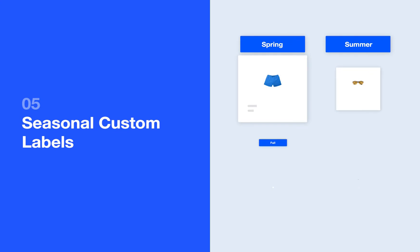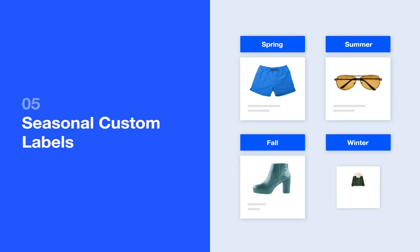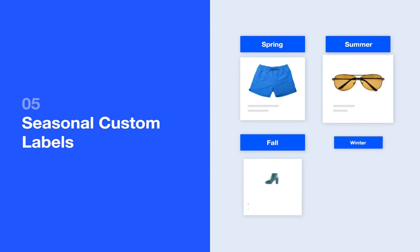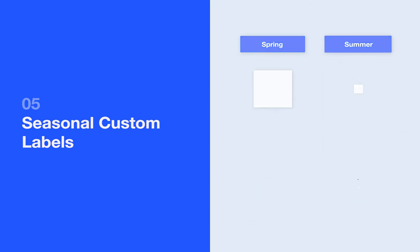Seasonal labels like fall, winter, spring, and summer can be used to promote your inventory at different times throughout the year without cycling products in and out of the feed.